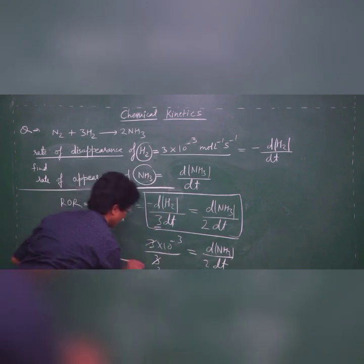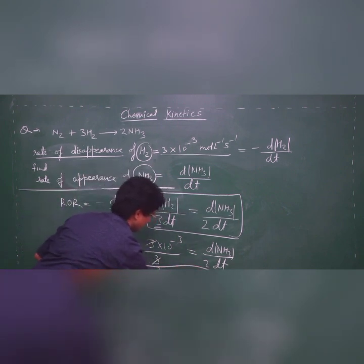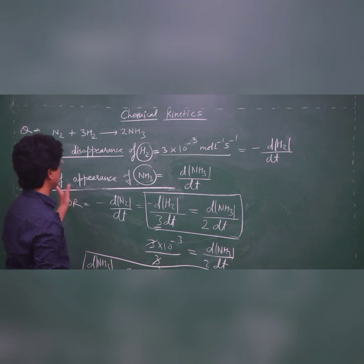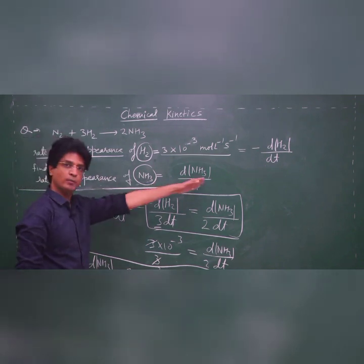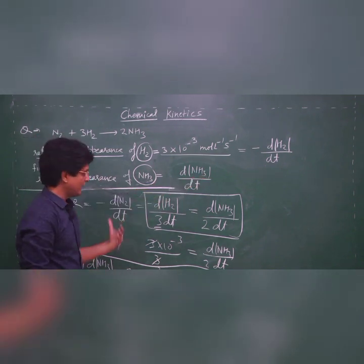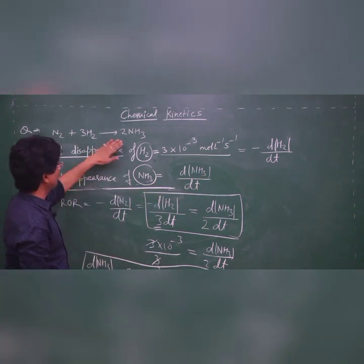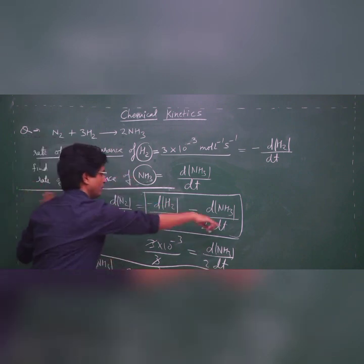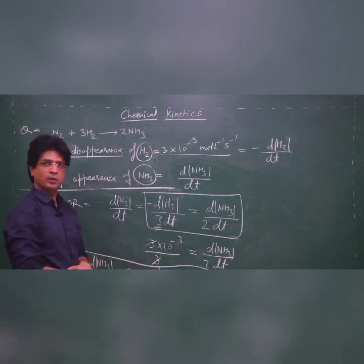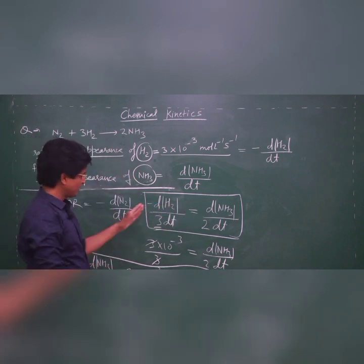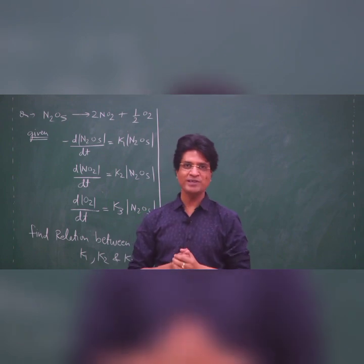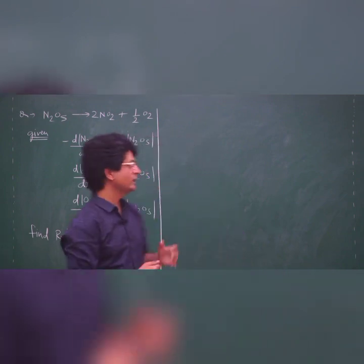So 2×10⁻³ moles per liter per second is the rate of appearance of ammonia. What I have done basically is connect all the rates of disappearance and appearance with the rate of reaction. I hope this is clear. Let us come to the next question.